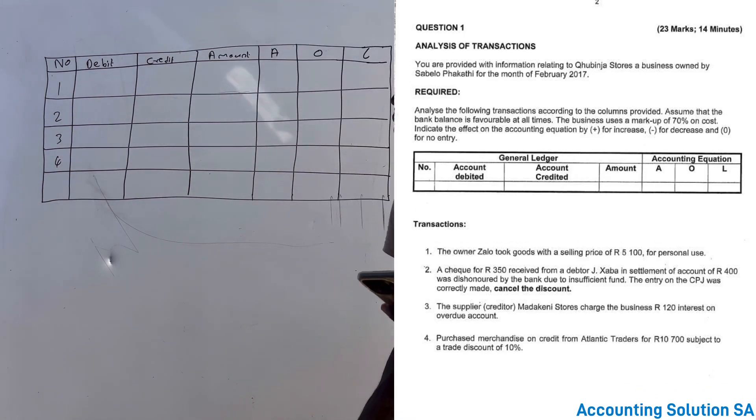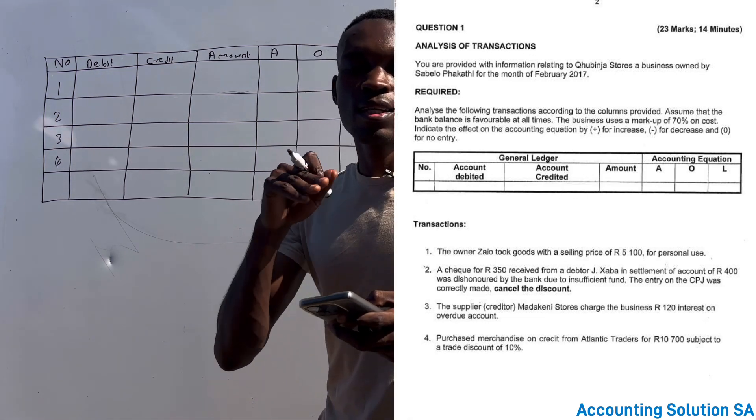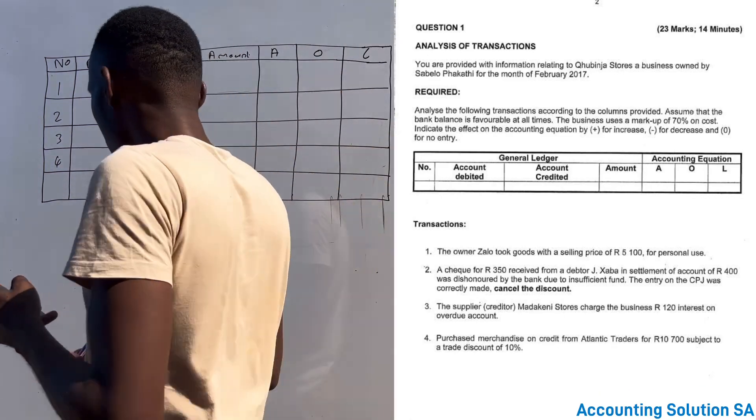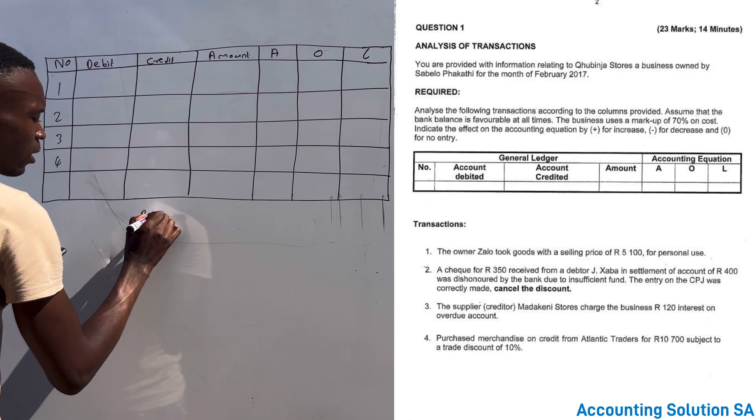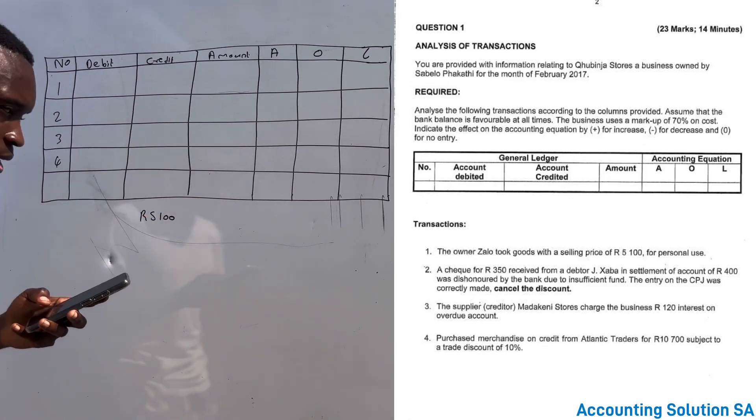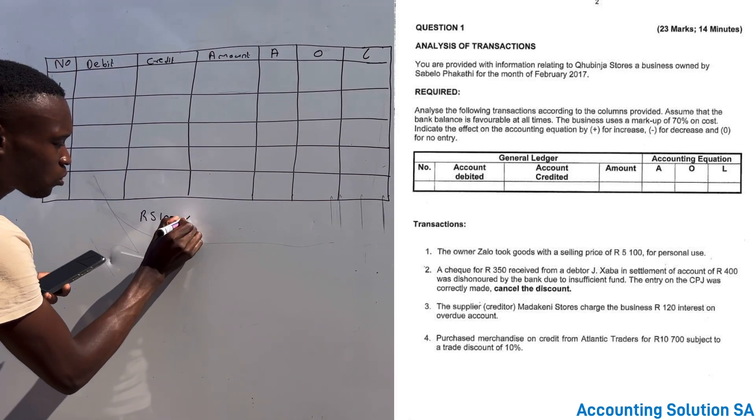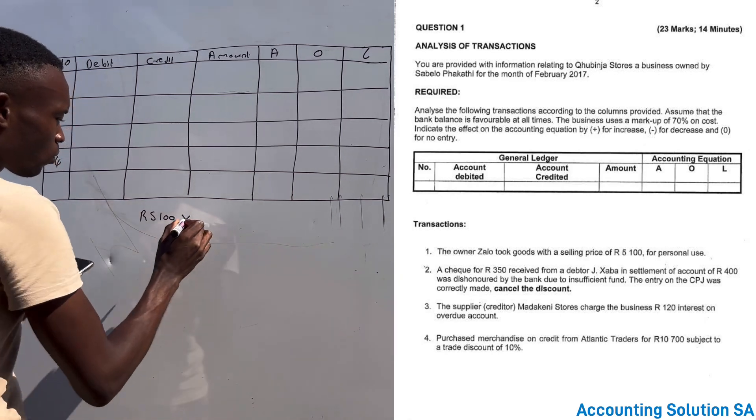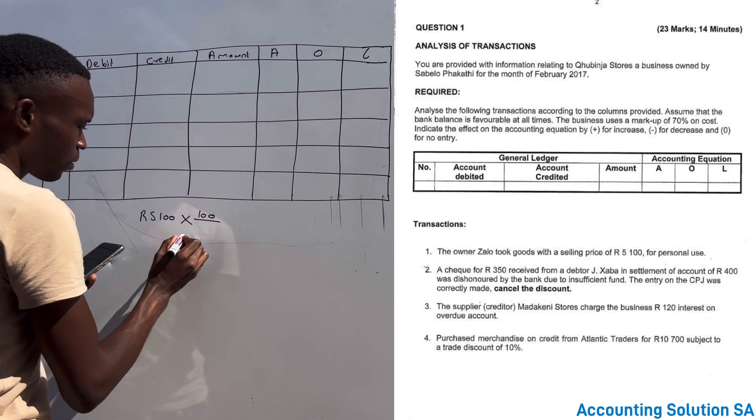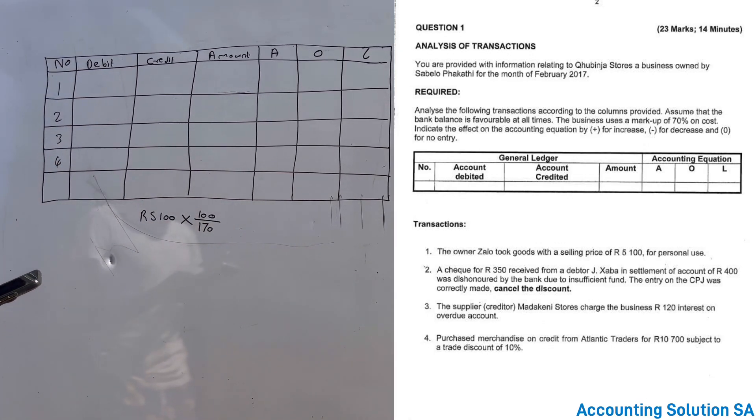If the owner took goods and they give us a selling price, the first thing that we need to do before we proceed is to adjust this selling price, because we need to record it by cost price, not by selling price. 5,100 and they give us a markup of 70 percent. So if we are reversing to a cost price, what we need to do is to say 100 over 170. Let me calculate this.